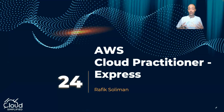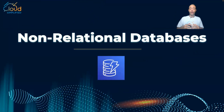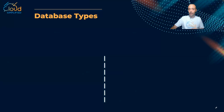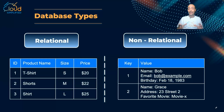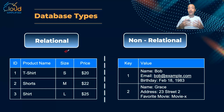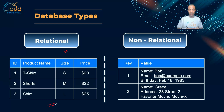In the previous video we started the interesting topic of AWS databases and we started with the first type, which is what we call relational databases. In this video we are going to complete what we started with non-relational databases. We have seen the same slide in the previous video and I can simply divide my database types into two families. The first family is the relational database, where we have a certain relation between multiple tables inside the database, and the schema is strict and fixed.